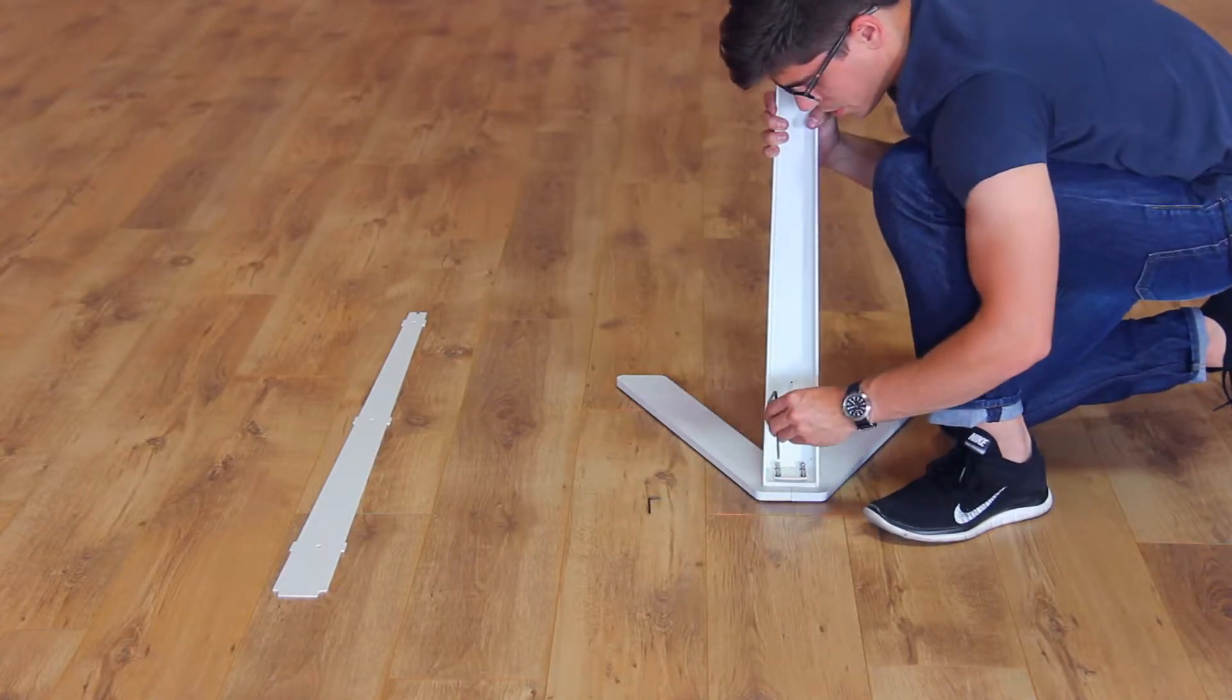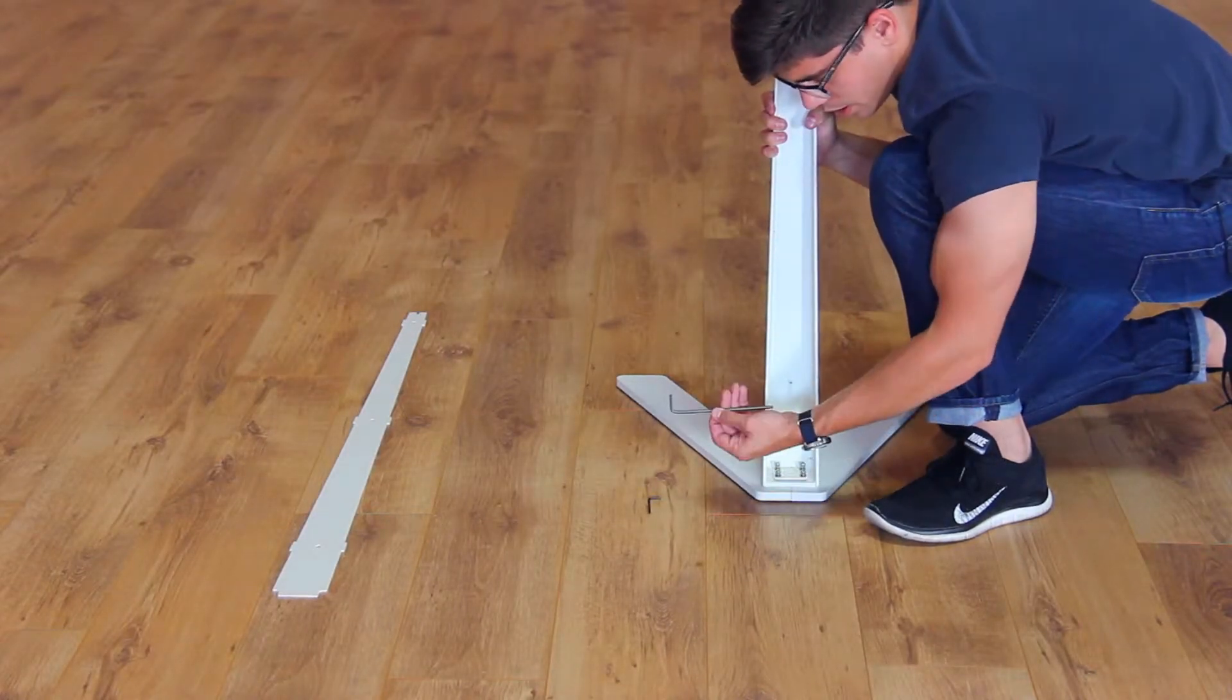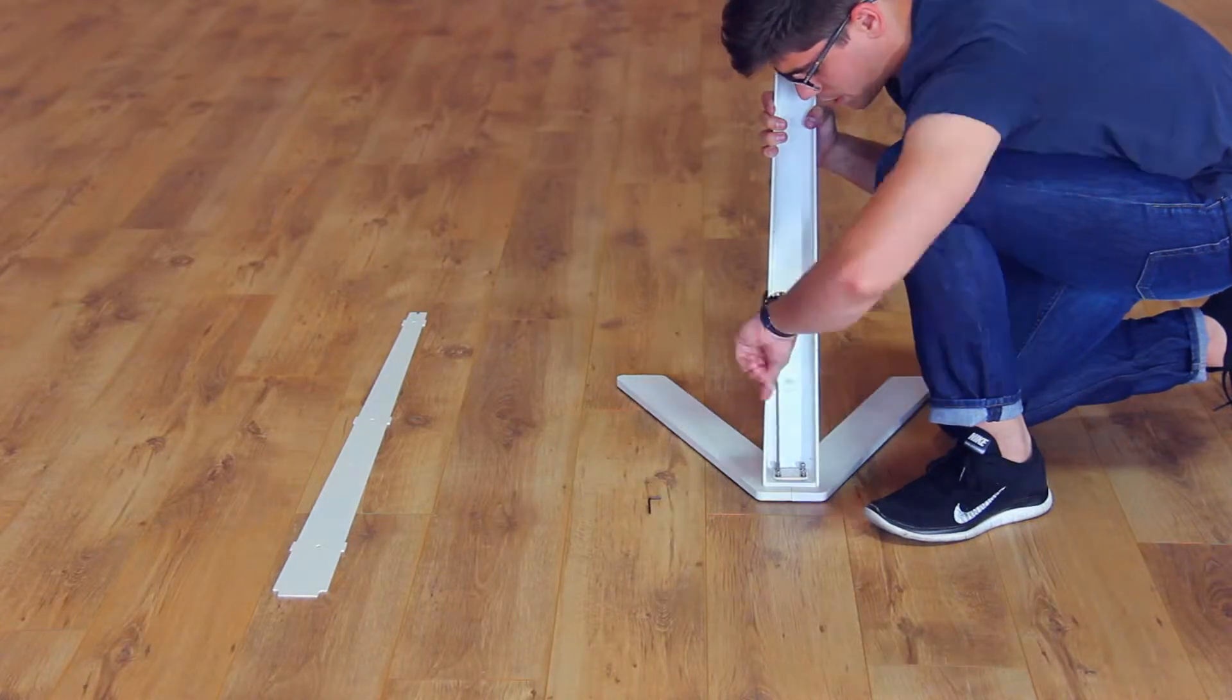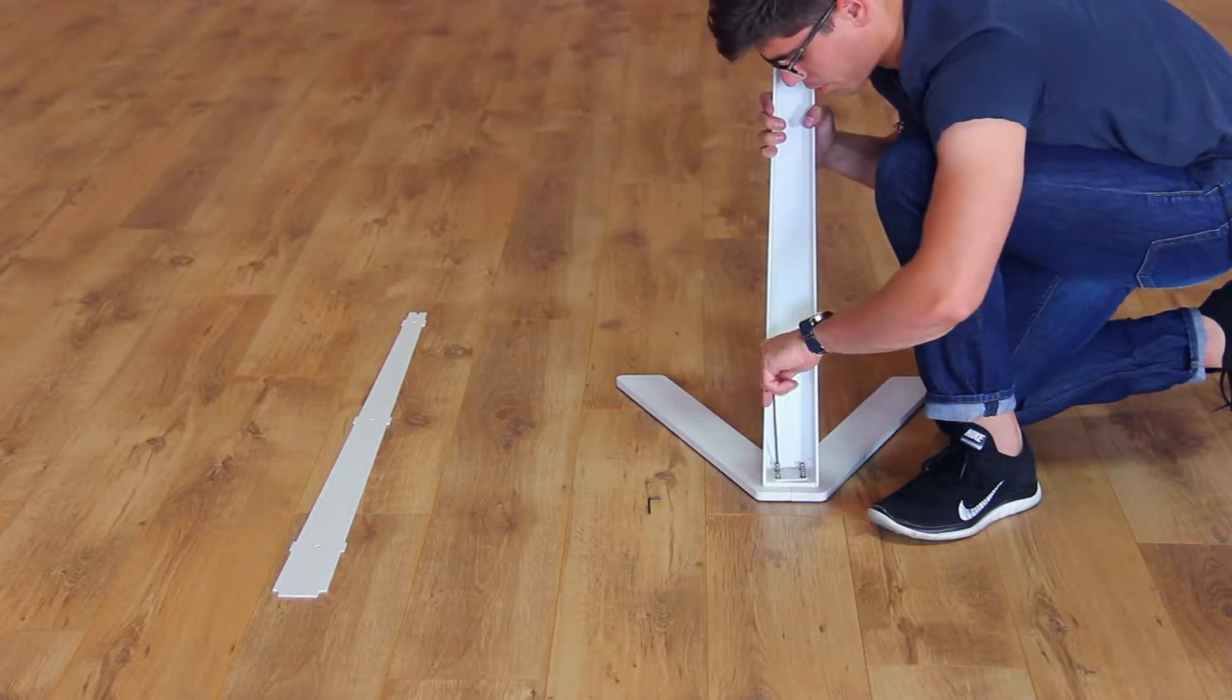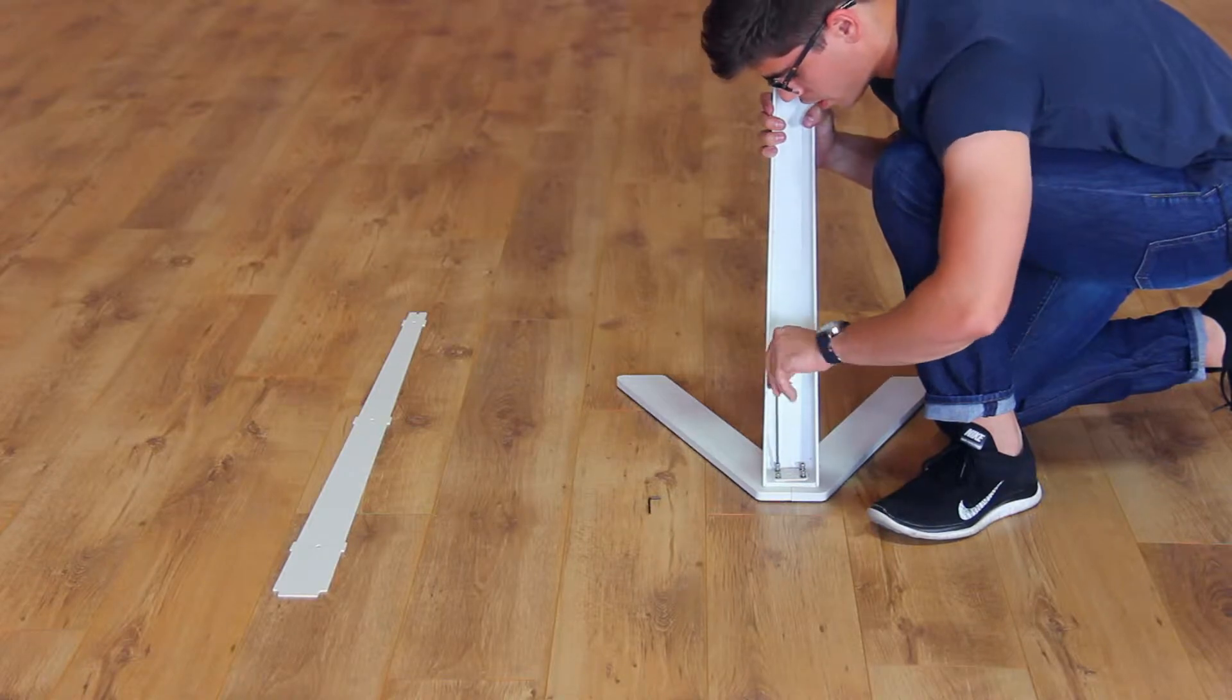Once you've got the screws started, you take your kiosk assembly tool and use it to tighten the screws. You want to get each one started first before you tighten each of them completely.